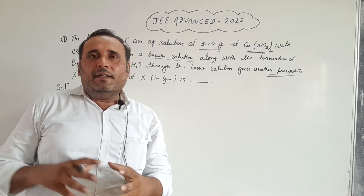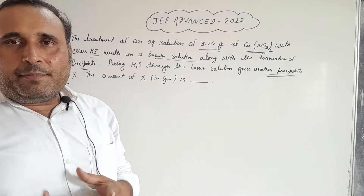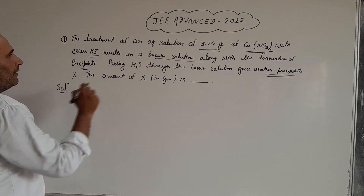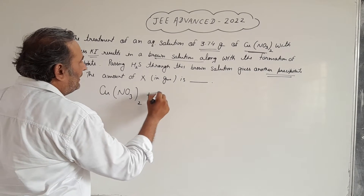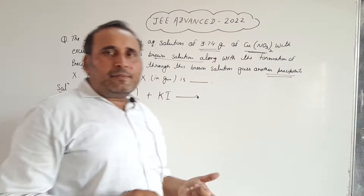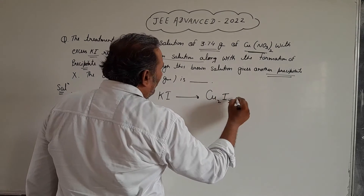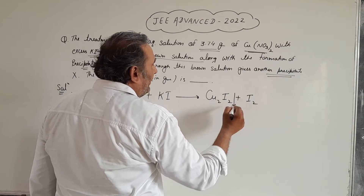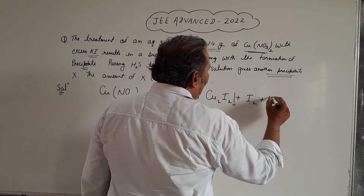First of all, we have to understand which reactions are involved in this question. Copper nitrate Cu(NO₃)₂ reacts with KI to produce Cu₂I₂ plus iodine. Cu₂I₂ will precipitate out, and due to this iodine the solution will show a brown color, as well as KNO₃ is also produced.